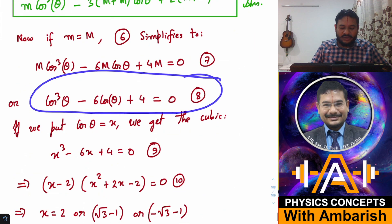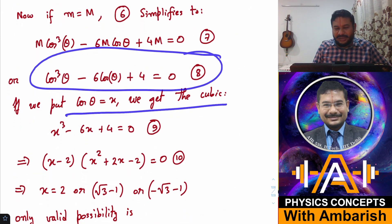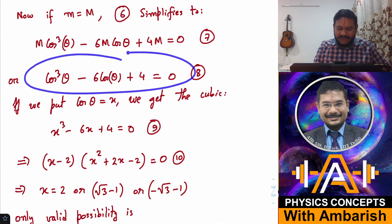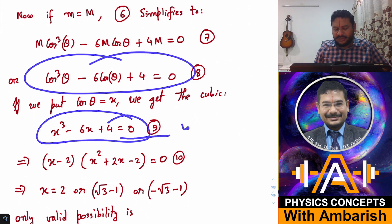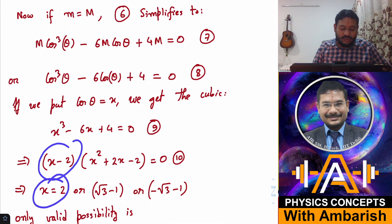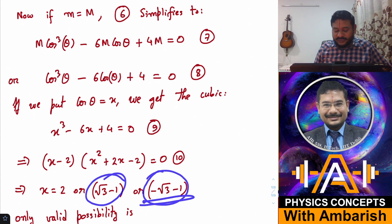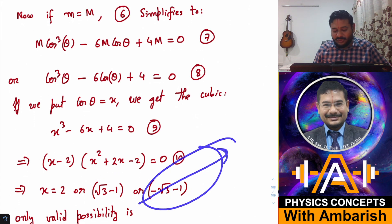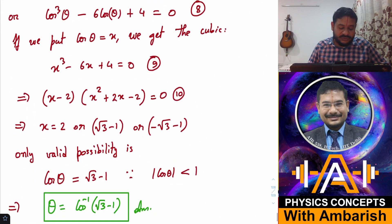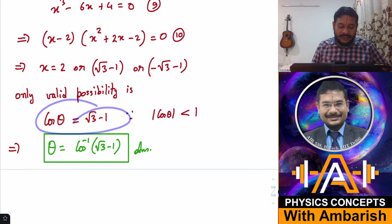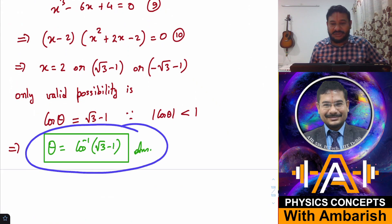Let us put cos theta equal to x. You get x³ - 6x + 4 = 0. Now factorize this. One root is x = 2, which is useless because cos theta cannot be 2. Other two roots are √3 - 1 and -√3 - 1. This is again a useless root; we want theta to be acute and moreover this magnitude is more than 1. So the only acceptable root is √3 - 1. We get cos theta equals √3 - 1, and therefore theta is cos inverse of (√3 - 1). That's our answer to this problem.